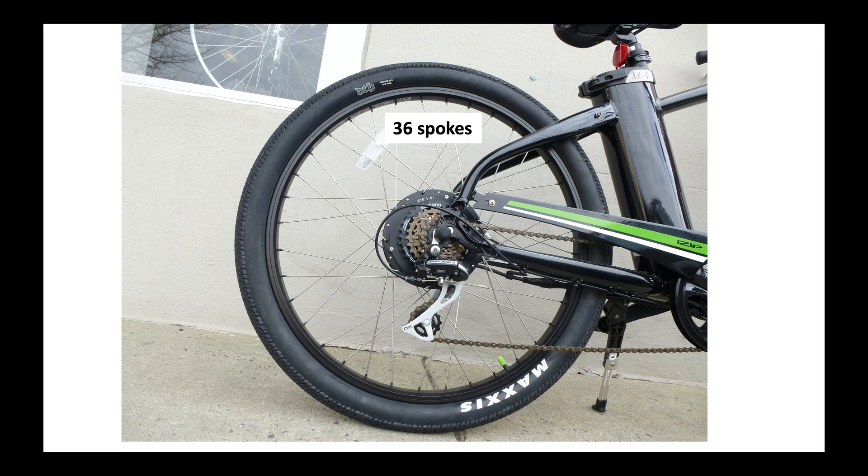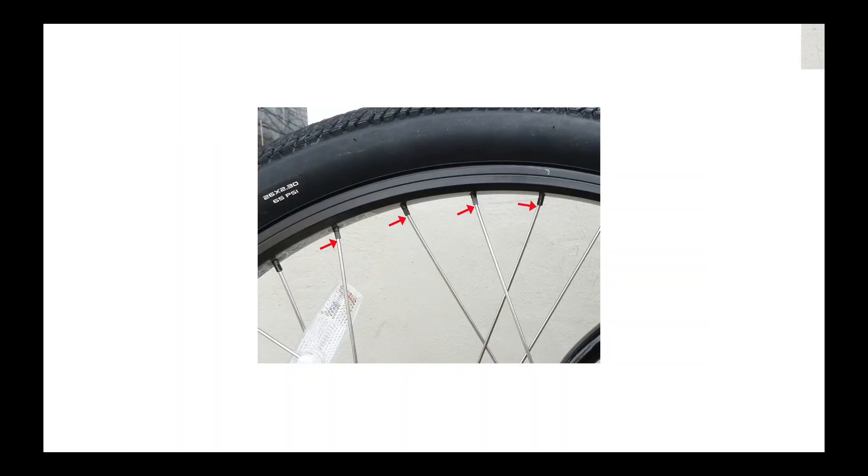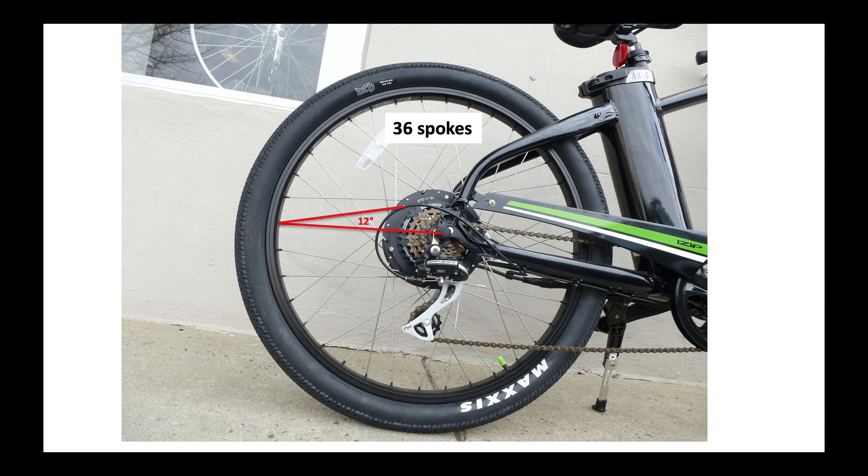Now here is a 36-spoke wheel with a big motor in it. And if we look here we find that we have some pretty bad looking angles between the nipple and the departure angle of the spoke. You can see here the red line representing the radius of the wheel and one of the spokes off at a 12-degree angle, which is not terrible but is certainly not great either.